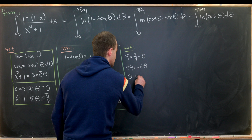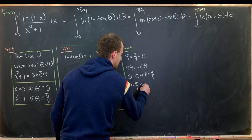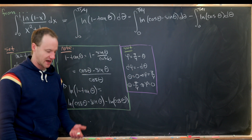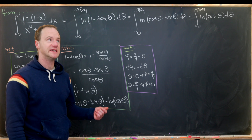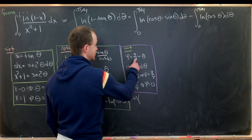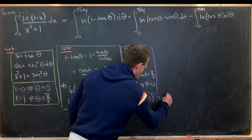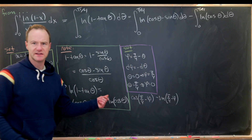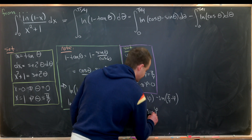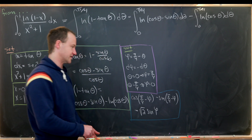When theta is 0, phi is pi over 4, and when theta is pi over 4, phi is 0 — so the bounds switch, but the minus sign switches them back. Using the sum angle formulas for cosine and sine, cosine of theta minus sine of theta, where theta is pi over 4 minus phi, simplifies to the square root of 2 times sine of phi.